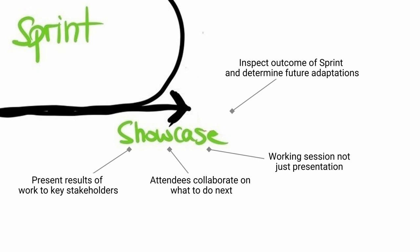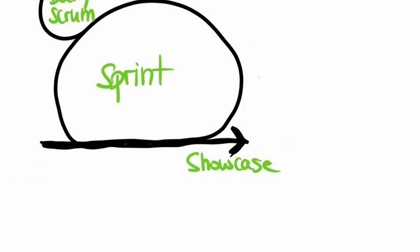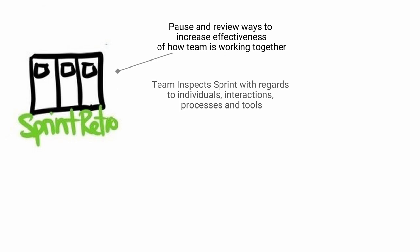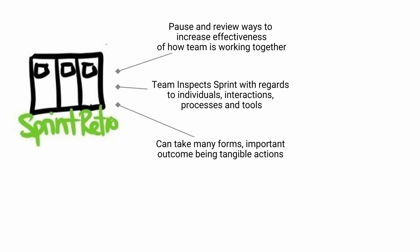Sprint retro. The purpose of the retro is to pause and review ways to increase quality and effectiveness of how the team is working together. The team together inspects how the last Sprint went with regards to individuals, interactions, processes, tools, and anything else that is relevant. This event can take many forms, with the important outcome being tangible actions that can improve subsequent Sprints. Typically this is an hour long for a two-week sprint.